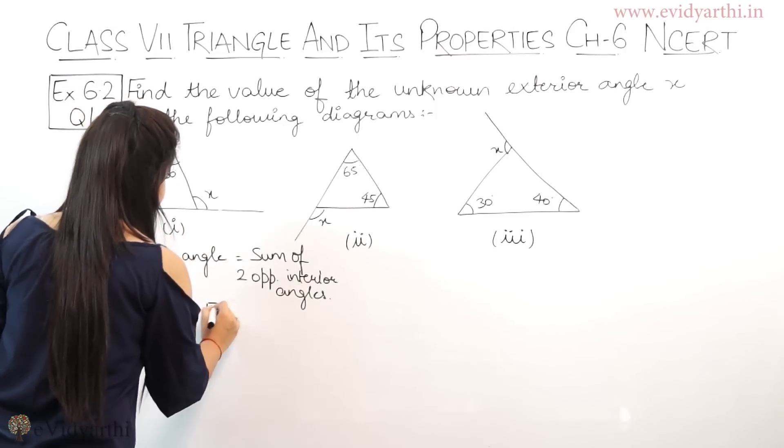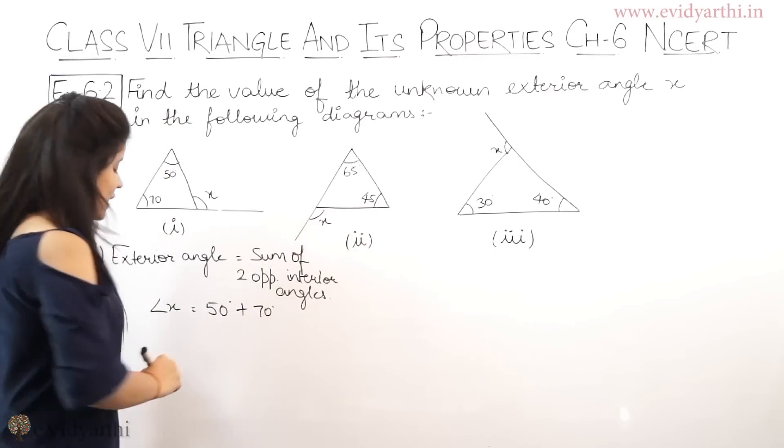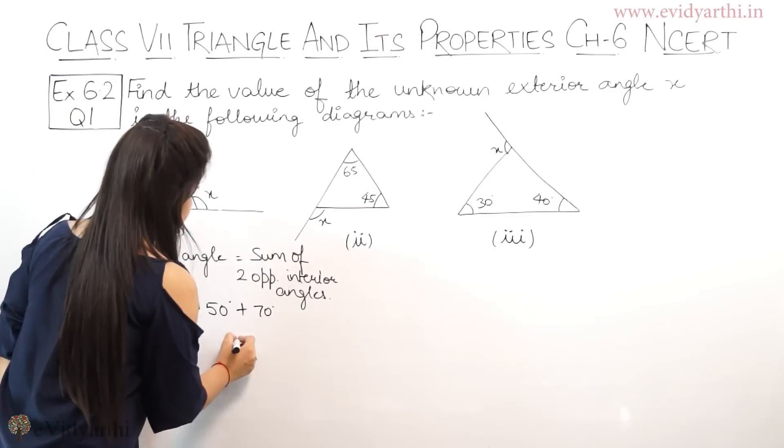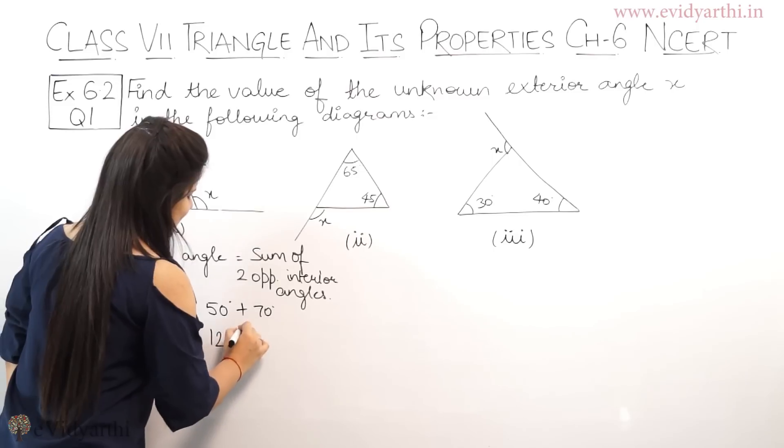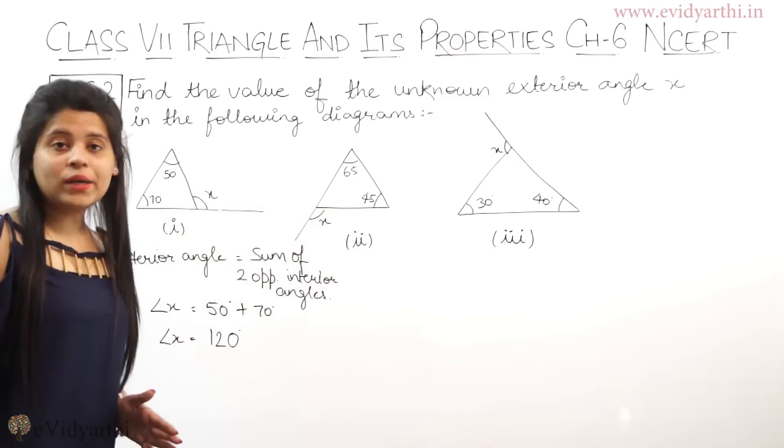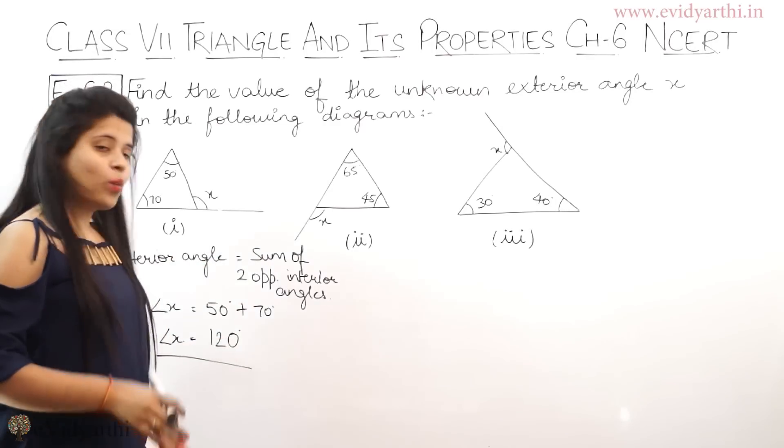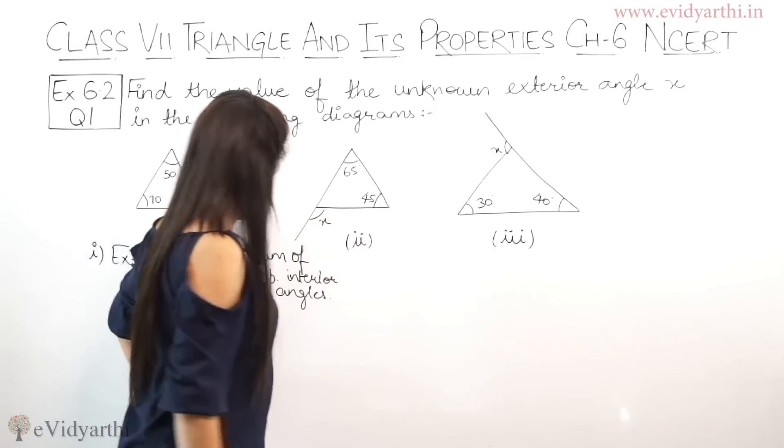That will be 50 degree plus 70 degree. Let's add this. 0, 0 is 0. Then, 7 plus 5 is 12. The answer is 120 degree. You have exterior angle X given here. What is the value? 120 degree. Now let's come to the next part.